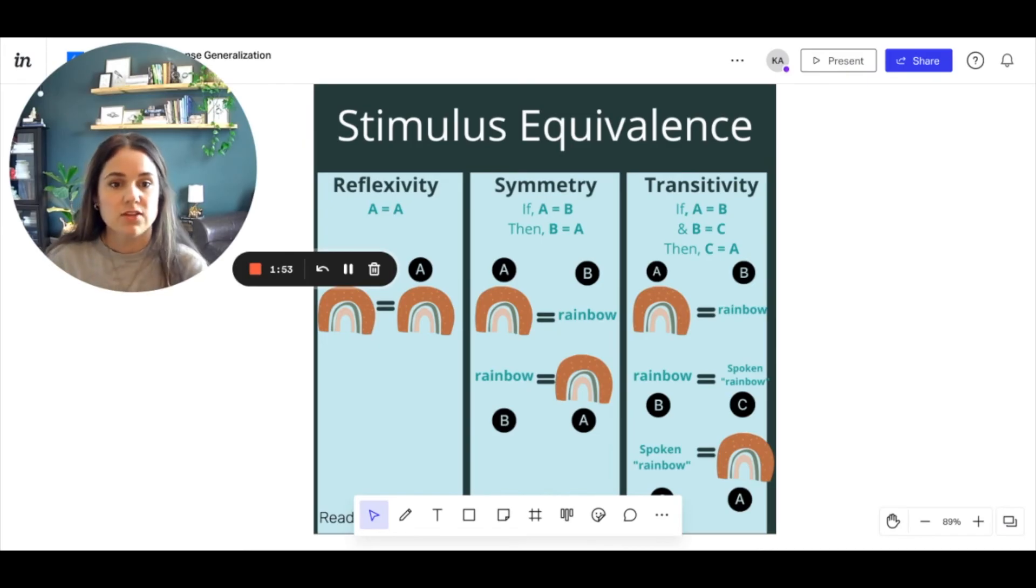So transitivity you can think of as understanding the entire concept of this particular rainbow. And once you have understood transitivity, you have achieved stimulus equivalence. So I hope using that in this sentence can help as well.